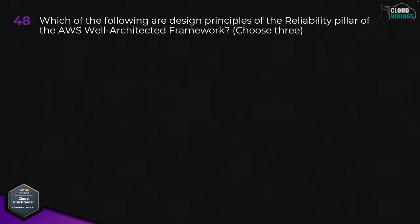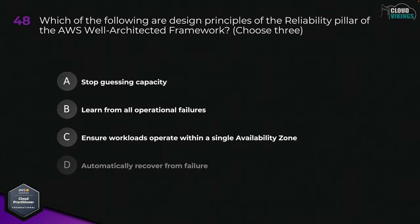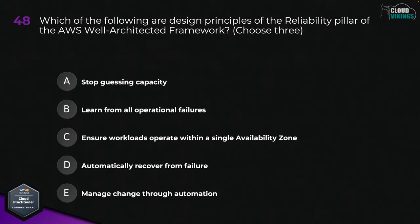Question forty-eight: which of the following are design principles of the reliability pillar of the AWS Well-Architected Framework? Choose three. Options are: A, stop guessing capacity; B, learn from all operational failures; C, ensure workloads operate within a single availability zone; D, automatically recover from failure; or E, manage change through automation. The three correct answers are A, stop guessing capacity; D, automatically recover from failure; and E, manage change through automation.